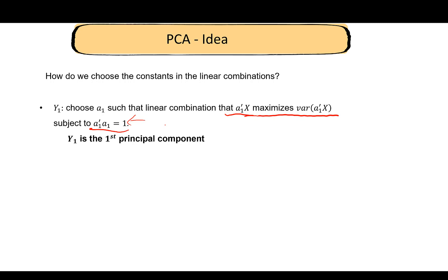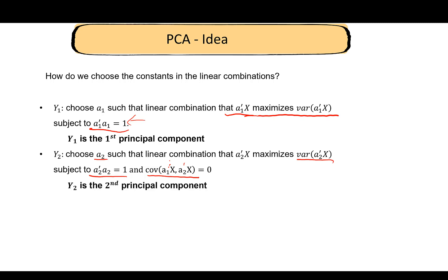Y₂—again we choose a₂, this vector a₂, such that the linear combination has maximum variance subject to this condition that the norm of a₂ is 1 and an additional condition that a₁ᵀx and a₂ᵀx are uncorrelated. That is, Y₁ and Y₂ are uncorrelated, and Y₂ is the second principal component.